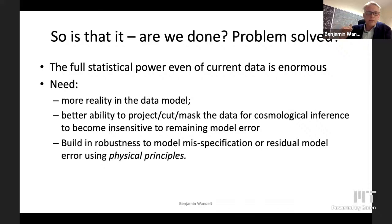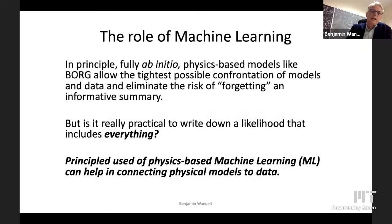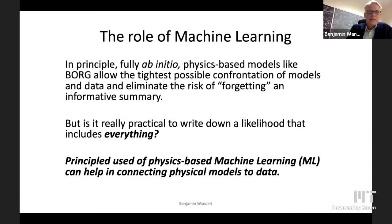We want to build in robustness to model mis-specification or residual model error in a way that is flexible but respects certain physical principles. At this point, we're getting to machine learning. In some sense, what I've told you about is already machine learning, because we've talked about Bayesian representations of what we know in a quantitative way about the history of the universe. But now we want to go to what people call more classic machine learning. There was a lot of physics in there, so you might be forgiven for thinking it's not really machine learning — maybe really simulation-based learning or something very physics-based. From now on, I'll talk about what I think is the principled use of physics-based machine learning that can help us in connecting physical models to data with much more precision and accuracy.